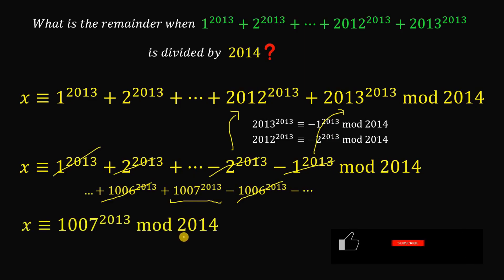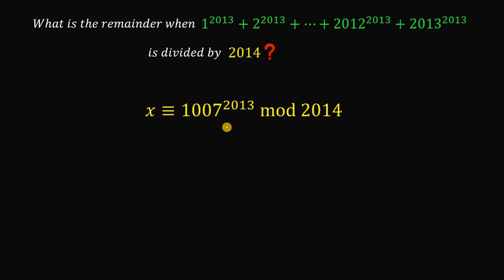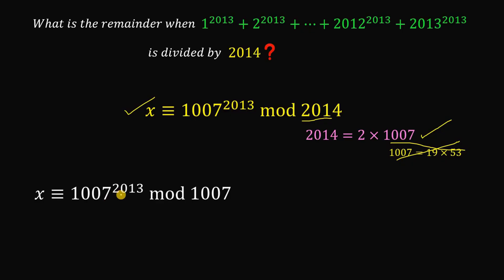So this reduces to 1007^2013 mod 2014. Take note that 2014 is equal to 2 times 1007. Although we know 1007 = 19 × 53, we don't need that because 2 × 1007 is enough. Now let's rewrite this congruence into two different congruences: x ≡ 1007^2013 (mod 1007) and x ≡ 1007^2013 (mod 2).